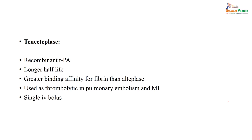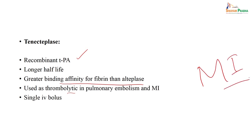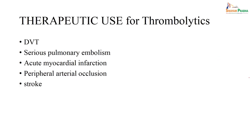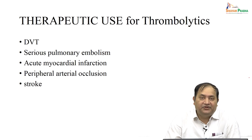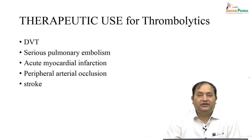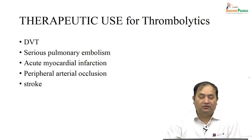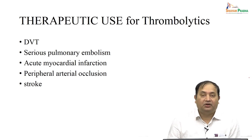Another drug is tenecteplase, developed as a recombinant tissue plasminogen activator. Its benefit is a longer half-life and greater binding capacity to fibrin compared to alteplase. It is used as a thrombolytic in pulmonary embolism and myocardial infarction, and is given as a single bolus dose in emergencies. Overall, the therapeutic uses of thrombolytics include deep venous thrombosis, serious pulmonary embolism, acute myocardial infarction, peripheral artery occlusion, and stroke.